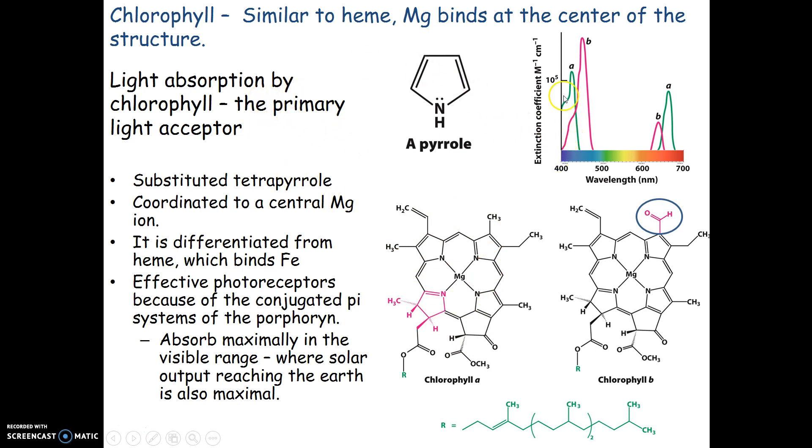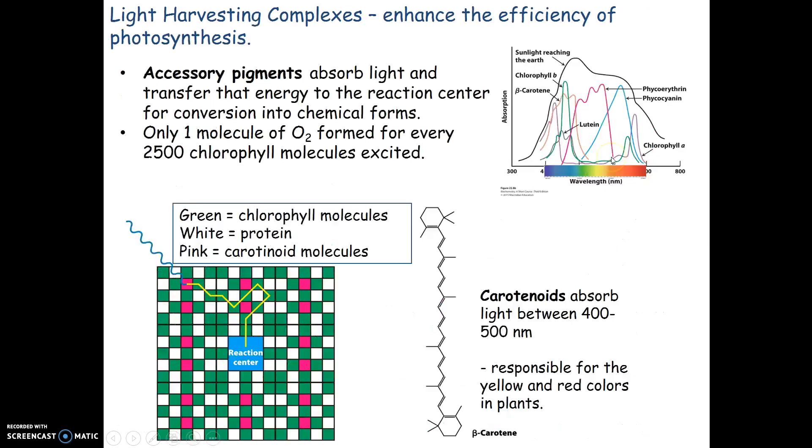Looking at the light absorbed by chlorophyll, it absorbs purple and blue, and also red and orange. If it absorbs these wavelengths of light, it reflects green and yellow. This is where we get the green color of plants.